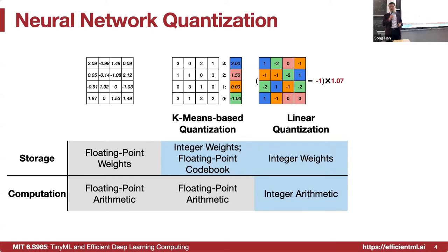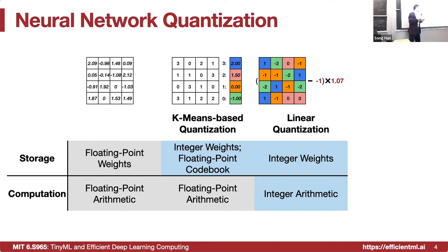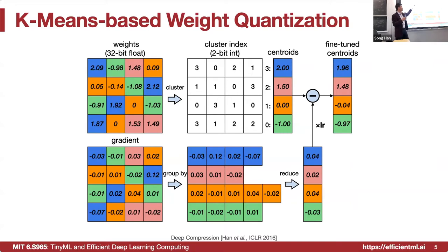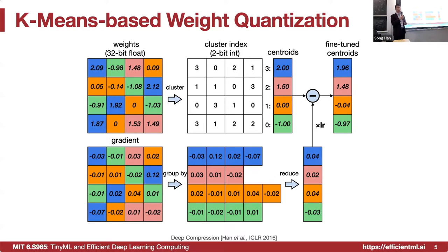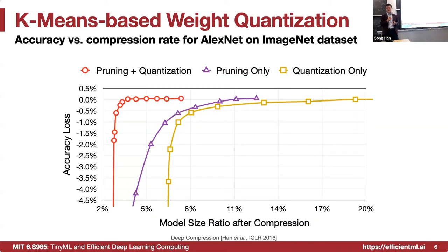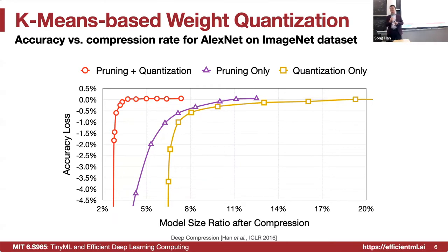Let's first review what we have learned so far. We've talked about different quantization schemes: floating-point versus integer weight, floating-point codebook versus fully integer weights. We've talked about k-means-based or linear-based quantization, where k-means quantization first clusters the weights and produces a non-linear centroid codebook. The inference is still done in floating-point — it just saves storage but not inference time. This also shows how much we can compress by combining quantization with pruning, reducing AlexNet to about 3% of its original size.